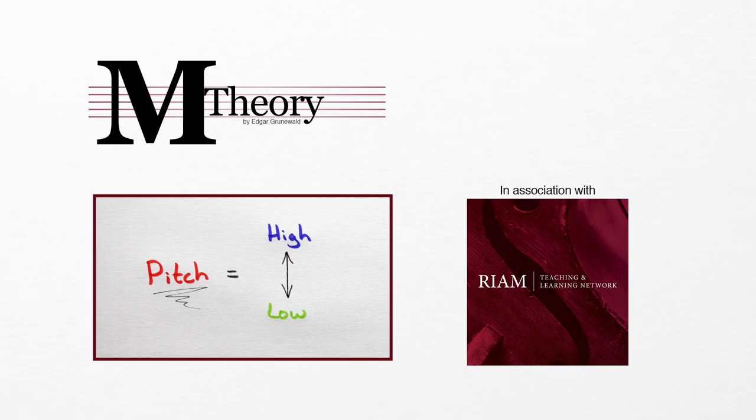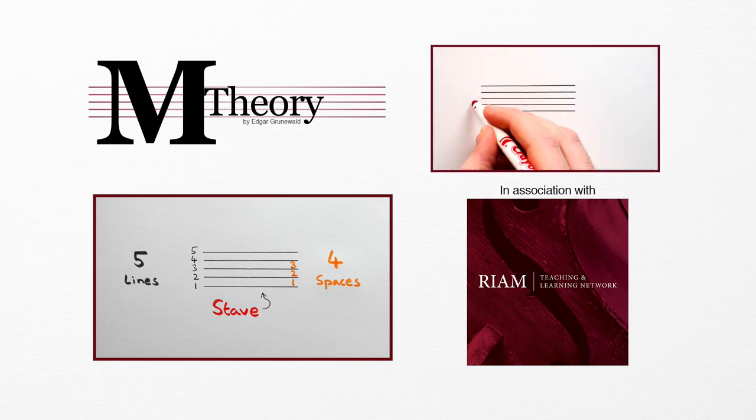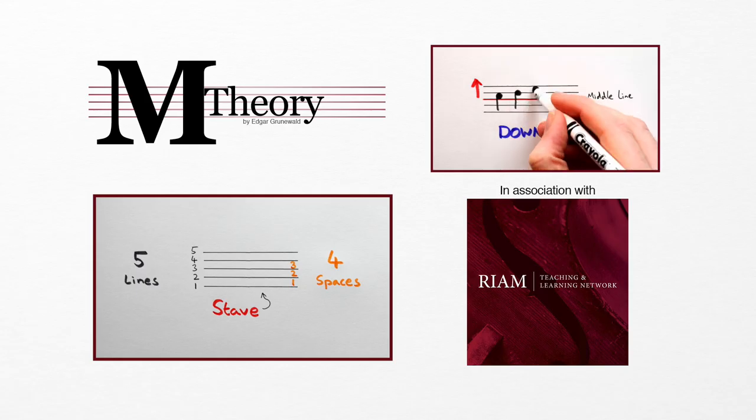We show pitch by using a stave. A group of 5 lines and 4 spaces. If a note is below the middle line, its stem will go up. Like this. Rule 2. If a note is above the middle line, its stem will go down. Like so.